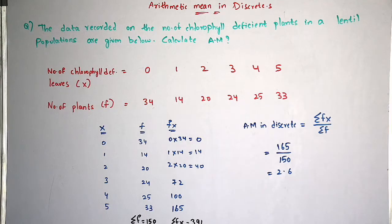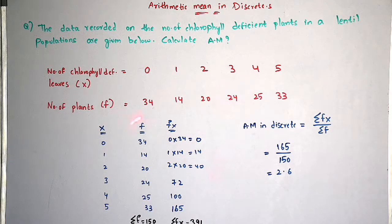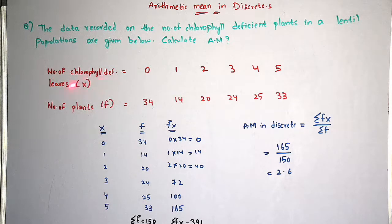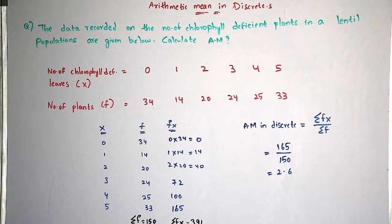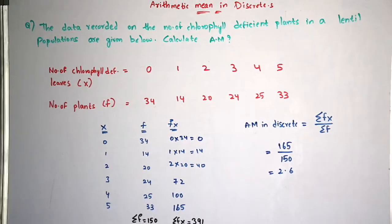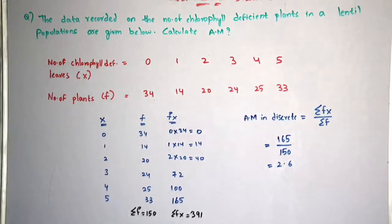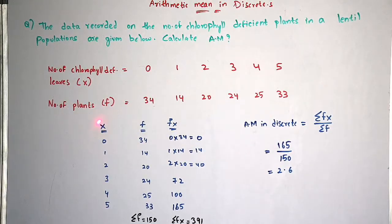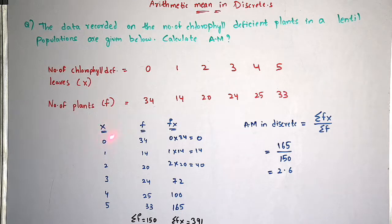Coming to the calculation — the formula for arithmetic mean in discrete series is sigma fx by sigma f. You have to prepare a table with columns x, f, and fx. In the examination you should write properly: x is number of chlorophyll deficient leaves, f is number of plants, and fx is frequency multiplied by variables. fx is nothing but f multiplied by x — you have to multiply frequency with variables.